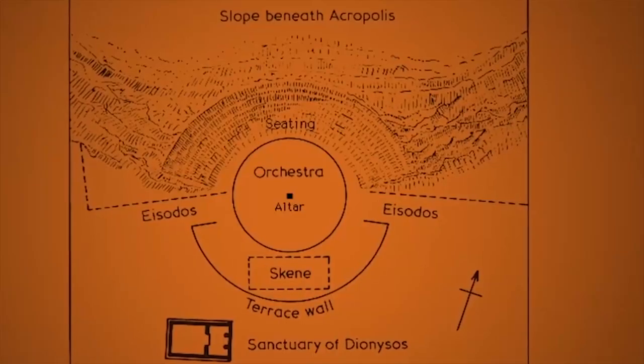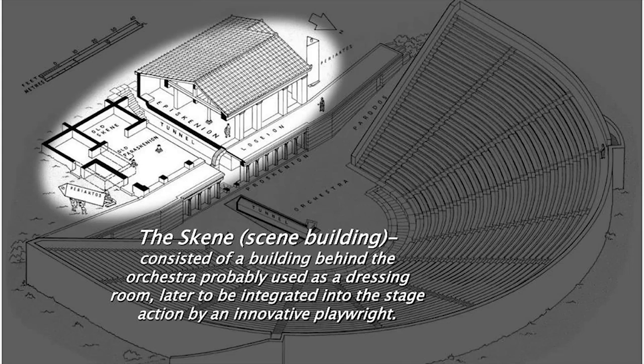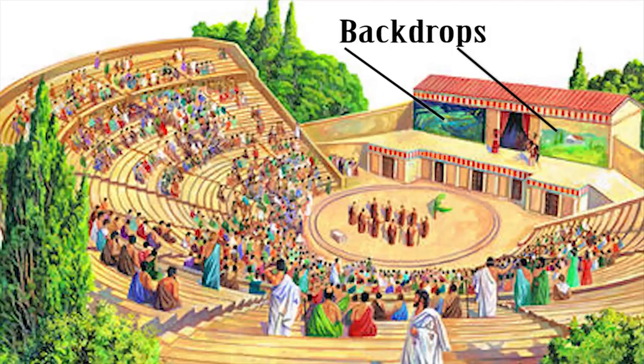Behind the orchestra circle was a large rectangular building called the skene, meaning tent, because originally it was just a tent put up during the festival. It was used as the actors' changing room. Later, the skene became a permanent building and often had backdrops painted on it, giving us the word scenery.